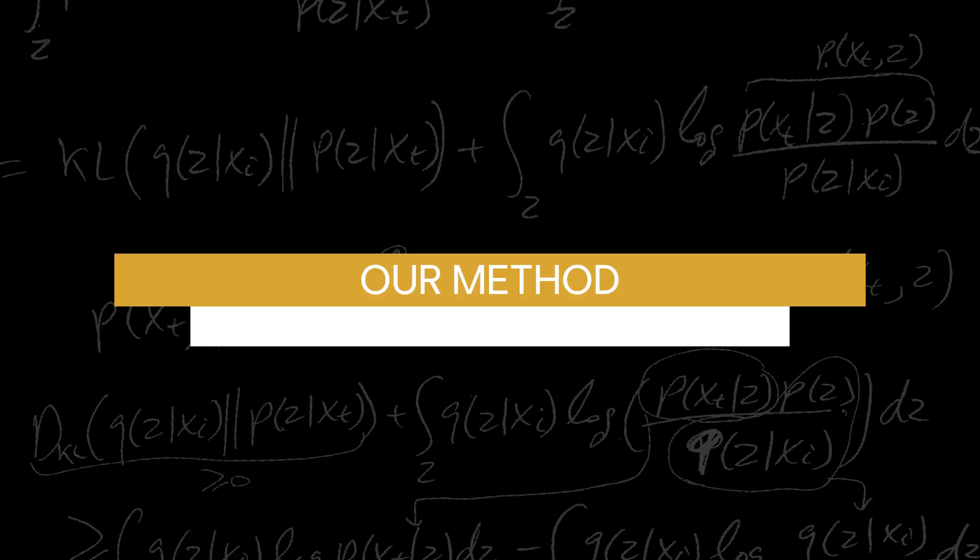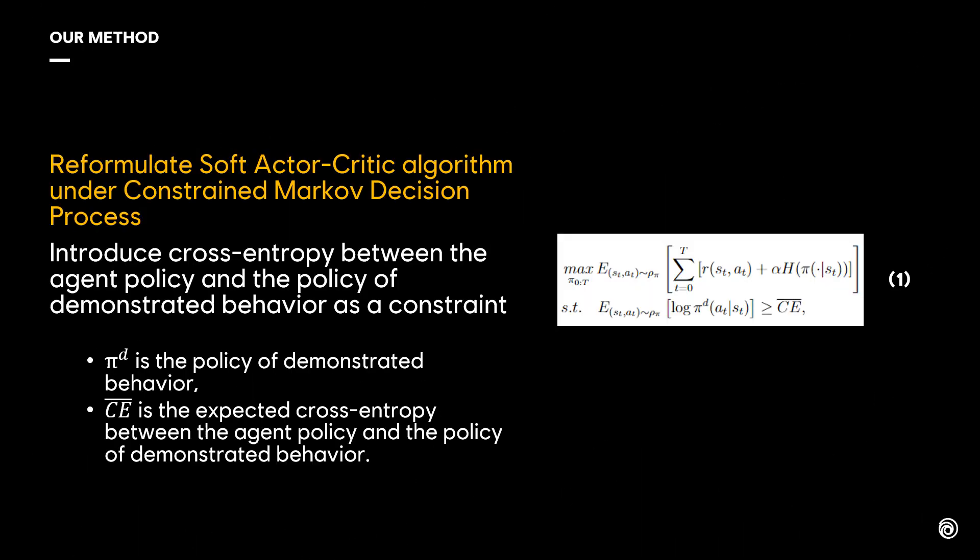Our method. To meet this need, we first reformulate a Soft Actor Critic algorithm on the constrained Markov decision process. We introduce cross entropy between the agent policy and the policy of demonstrated behavior as a constraint shown in equation 1.